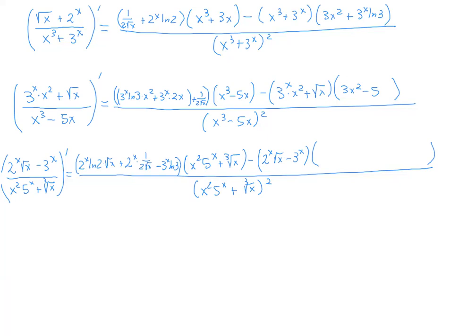For the denominator, I need the derivative of ∛x — remember that ∛x = x^(1/3), so its derivative is (1/3)x^(−2/3) by the power rule. If you have any doubts about applying the power rule to such roots, please revisit the previous lecture. And the derivative of x² · 5^x by the product rule is 2x · 5^x + x² · 5^x · ln5. That gives us the derivative we were looking for, and that completes this lecture. Thanks for watching, and I will see you next time.